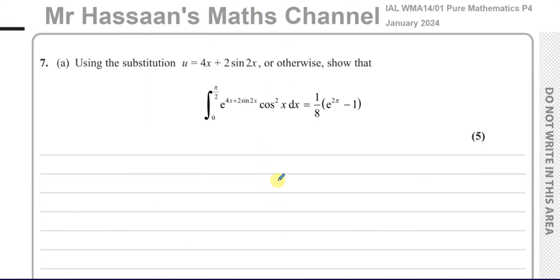In this question, we are told to use the substitution u equals 4x plus 2 times sine 2x or otherwise, show that the integral of this expression is going to be given by 1 over 8 e to the power of 2 pi minus 1. Now here we have an expression which obviously looks like it cannot be solved by using anything like reversing the chain or anything like that.